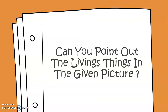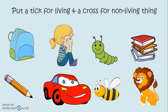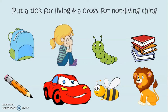Now, can you point out the living things in the given picture? Let's see what all we have in the picture. We have a bag, a girl, a caterpillar, books, a pencil, a car, a bee and a lion — roar! We have to put a tick for living and a cross for non-living.